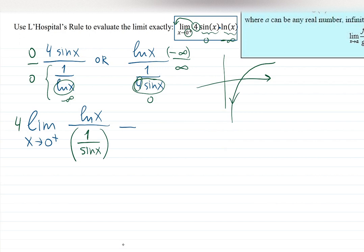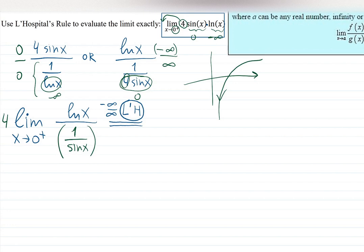Now we have an ∞/∞ situation: the numerator gives −∞ and the denominator we need to check. I'll make a note — I like writing 'L/H' in a circle to indicate to the reader that we're using L'Hôpital's rule. It's a good habit to keep clear notes. In the future you might become a scientist publishing results, and it's rude to make other scientists waste time guessing what you were doing. So start early: write good notes.